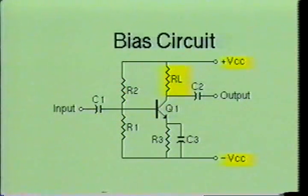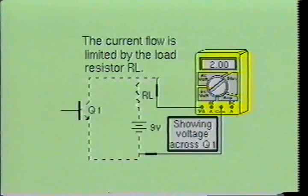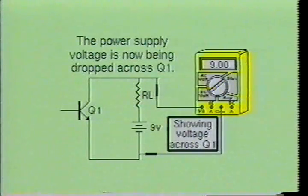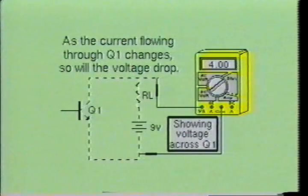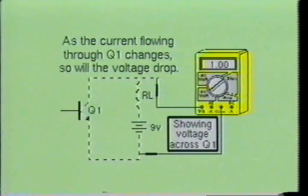The load resistor RL, which is attached to the output of the amplifier along with the power supply, is used to set the power output limitations of the amplifier. The output signal current cannot exceed the power supply voltage divided by the load resistor. The maximum current flow through the transistor is limited by RL. When the current flow through the transistor is stopped, the voltage drop across the emitter-collector will equal the power supply voltage. Between the saturation and cutoff limitations of the transistor, there are an infinite number of current levels, and the current flowing in the output circuit at any instant must be between these two limits.